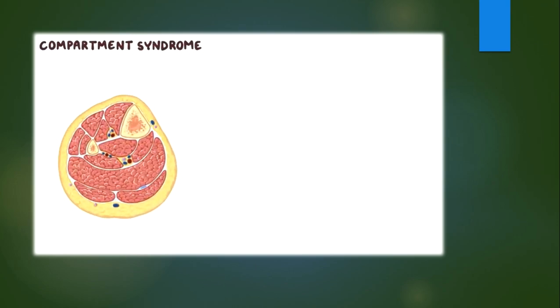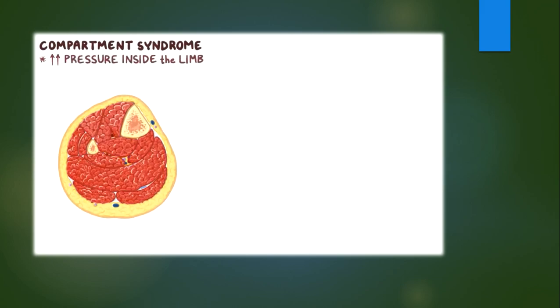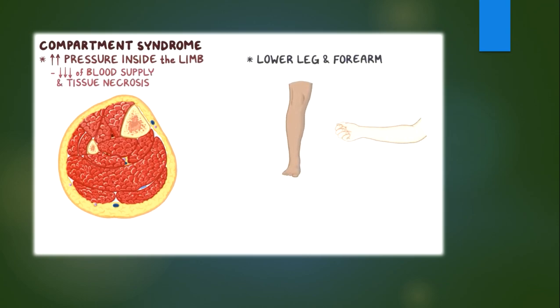Alright, this is a quick recap. Compartment syndrome refers to the increased pressure inside the section of the limb that contains muscles, nerves, and blood vessels and results in the reduction of blood supply and tissue necrosis. It usually develops in the lower leg and forearm after traumas like a bone fracture. If not treated in time, it can lead to permanent muscle and nerve damage.